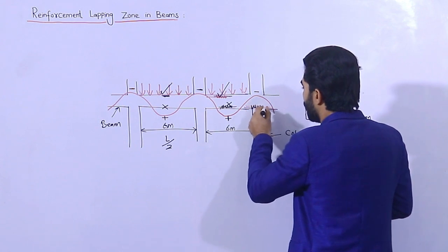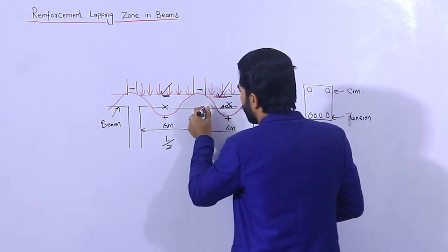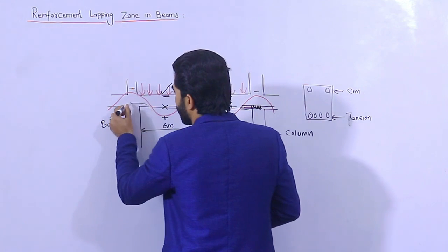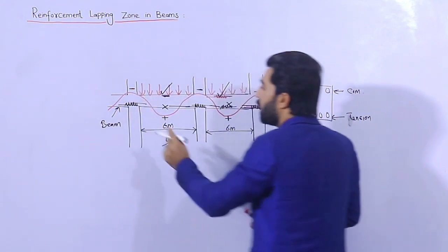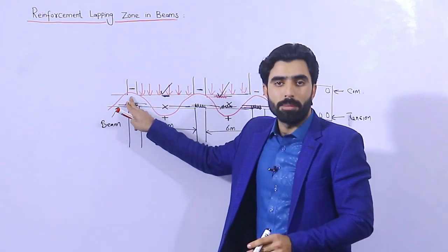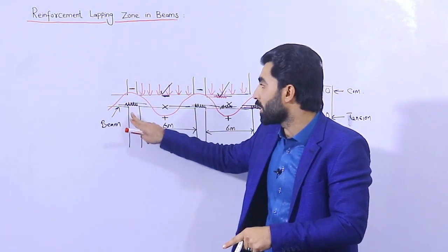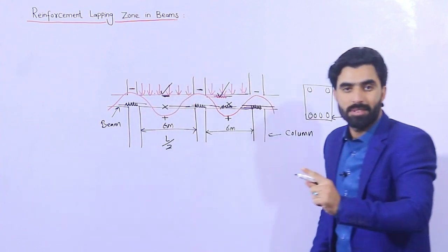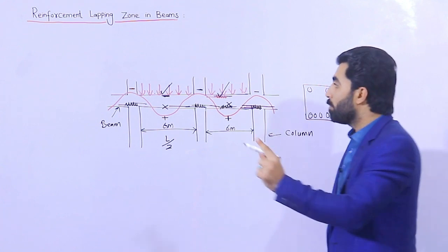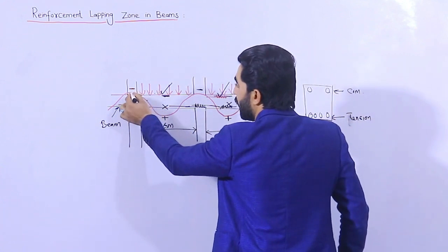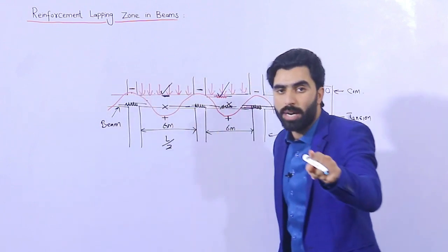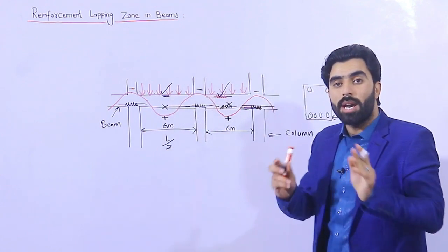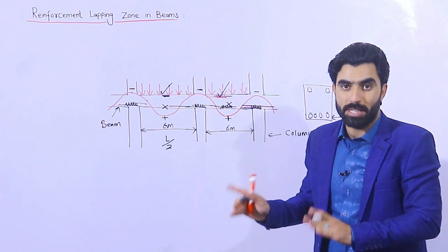Here you can provide the lapping at this place, and also at this place you can provide the lapping. You can extend the steel rod here. We don't have the maximum tension here; we have negative bending moment, so you can provide at the junction. But you are not allowed to provide at the distance of L/4 at the top, because we have negative bending moment at that place. At the middle portion of the beam in the compression zone, you are allowed to provide lapping.